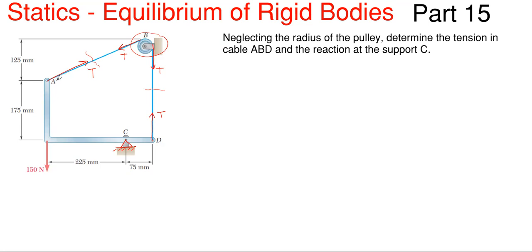The reaction up here will pretty much only be dealing with the tension in the cable. The reaction down here at C will be dealing with this entire member along with the tension in the cable and this 150 Newtons. So we are going to find the tension first and then our reactions. To do that, I need to determine the slope for this portion of the tension in the cable from A to B. We're given dimensions of 125, and from A up to B will be 225 plus 75 plus 75, which is 300. The hypotenuse of that triangle is 125 squared plus 300 squared, square rooted, which is 325.